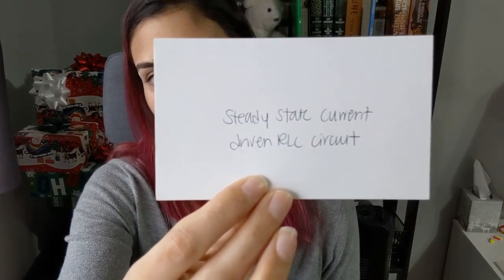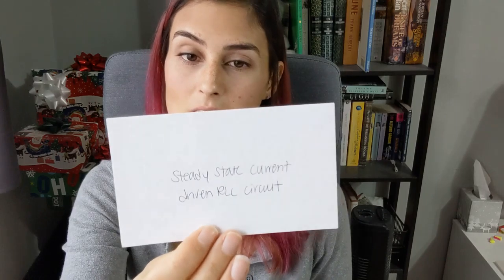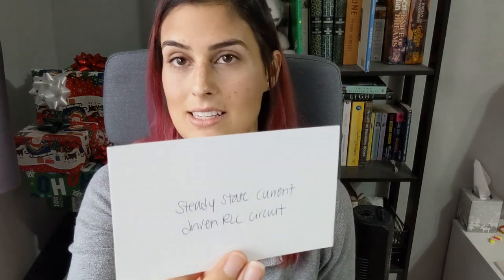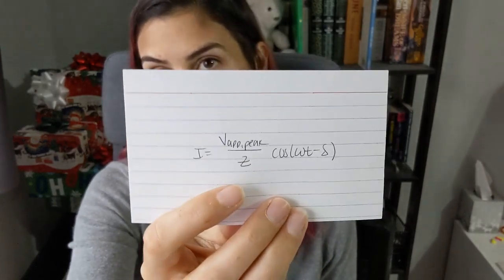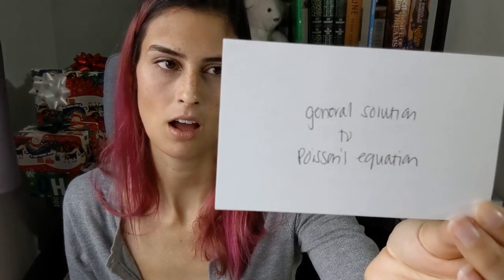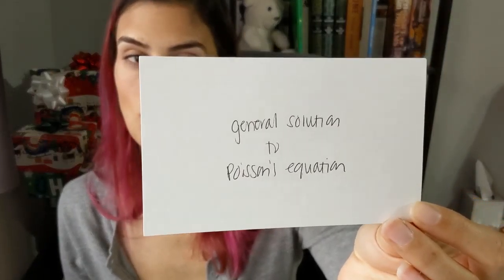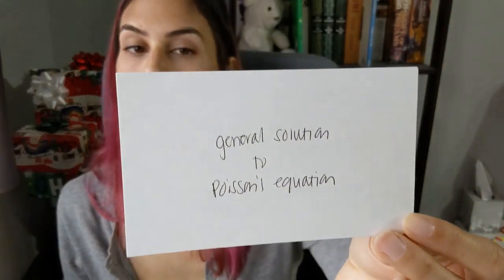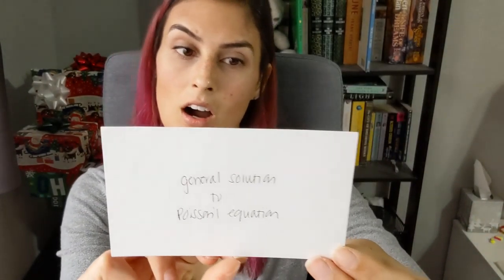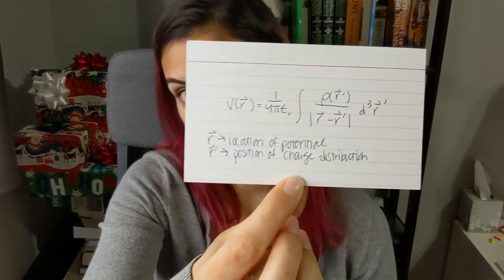The steady-state current of a driven RLC circuit: I equals V applied peak over Z times cosine of omega t minus delta, so it's a cosine with amplitude given by the peak over impedance. The general solution to Poisson's equation: V of r equals 1 over 4 pi epsilon naught times the integral of rho of r-prime over the magnitude of r minus r-prime times dV, where r is the location of the potential and r-prime is the position of the charge distribution.